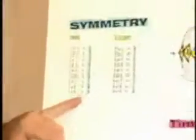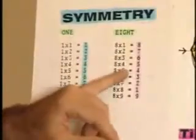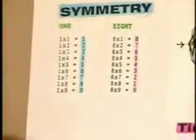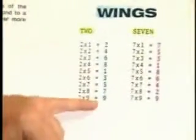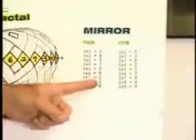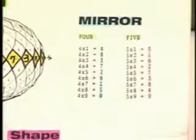Multiples of one: 1, 2, 3, 4, 5, 6, 7, 8, 9. Multiples of eight: 8, 7, 6, 5, 4, 3, 2, 1, 9 — a perfect mirror. Multiples of two: 2, 4, 6, 8, 1, 3, 5, 7, 9. Multiples of seven: 7, 5, 3, 1, 8, 6, 4, 2, 9 — a perfect mirror. Multiples of five: 5, 1, 6, 2, 7, 3, 8, 4, 9. Multiples of four: 4, 8, 3, 7, 6, 1, 5, 9 — the total reverse of five. Everything's a mirror.